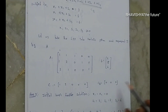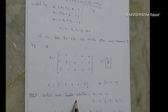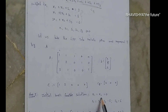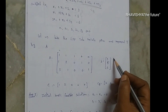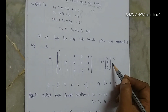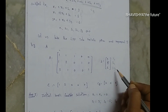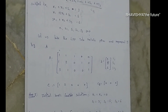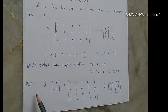In step 2, we take the initial basic feasible solution: x1 = 0, x2 = 0, s1 = 3, s2 = 5, s3 = 6. Now let us find the solution using the revised simplex method.